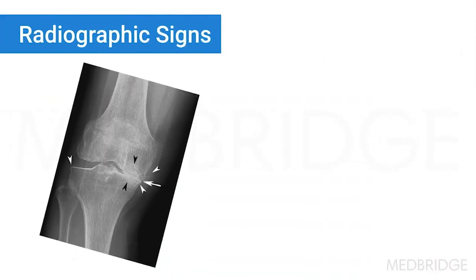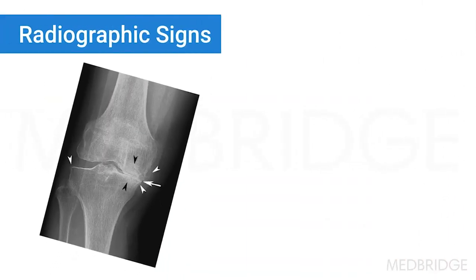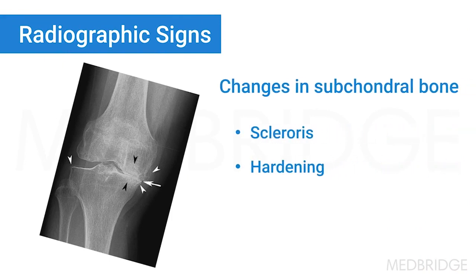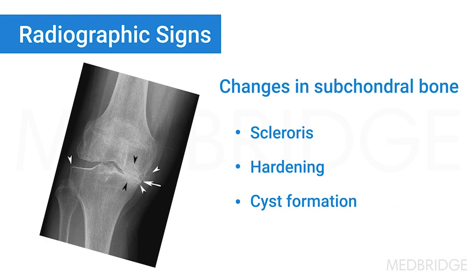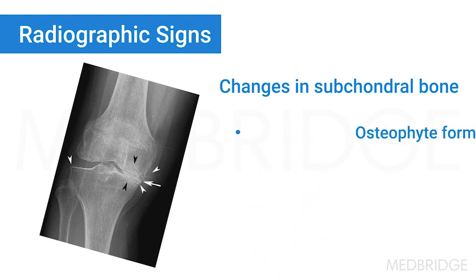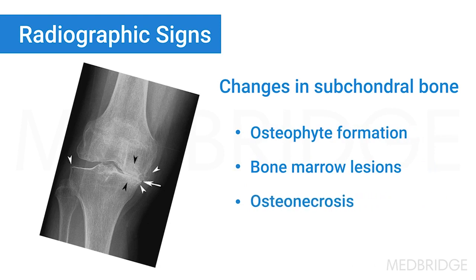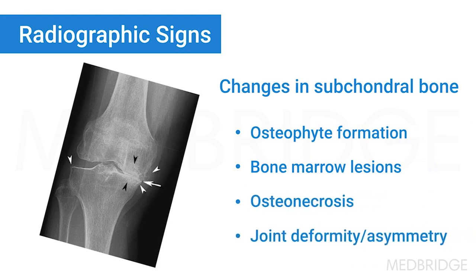On radiographs, osteoarthritis is characterized by changes in subchondral bone, including sclerosis or hardening and cyst formation. You may also see osteophyte formation, bone marrow lesions, and in severe cases osteonecrosis and bone attrition, as well as overall joint deformity and asymmetry.